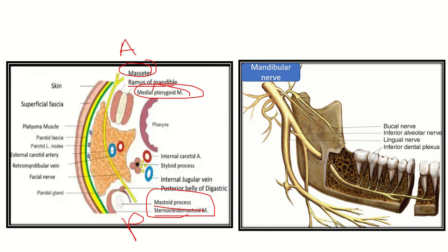In red here is the external carotid artery, and just close to it is the retromandibular vein. Another important structure is the facial nerve. So these three structures — external carotid artery, retromandibular vein, and facial nerve — all have a risk of injury during this procedure.